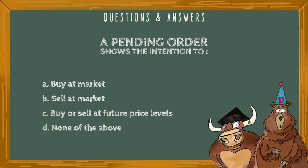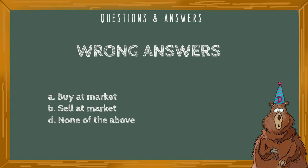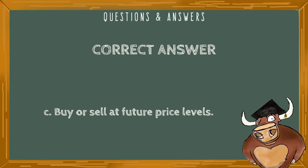A pending order shows the intention to: A) buy a market, B) sell a market, C) buy or sell at future price levels, D) none of the above. The correct answer is C, buy or sell at future price levels. A pending order simply means that you are looking to get into the market once certain conditions are met in the future.